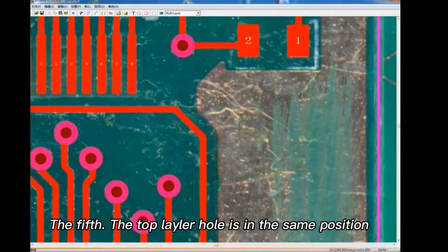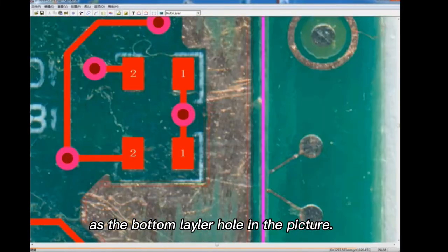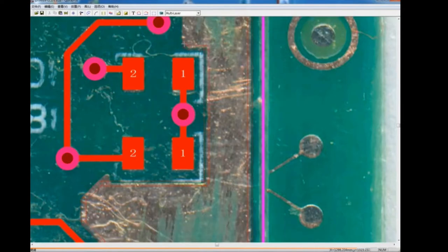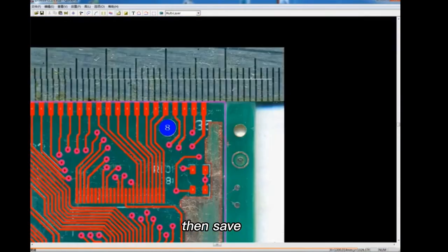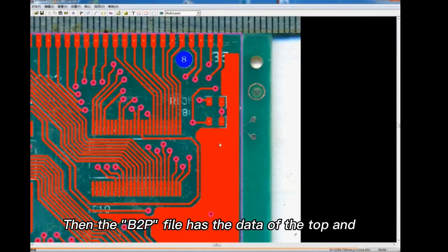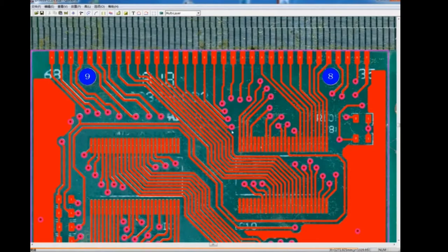The fifth step: the top layer hole is in the same position as the bottom layer hole in the picture. Now we can trace the bottom layer line just like tracing, then save. Then the BRP file has the data of the top and bottom two layers.